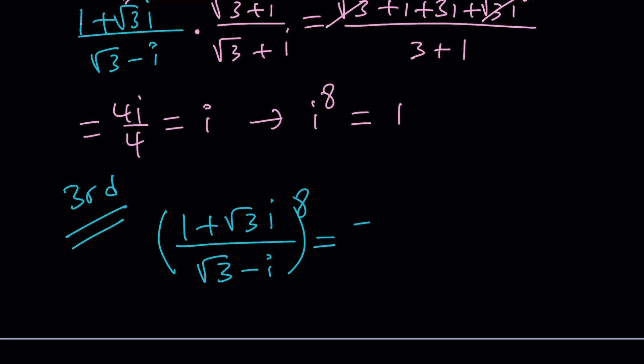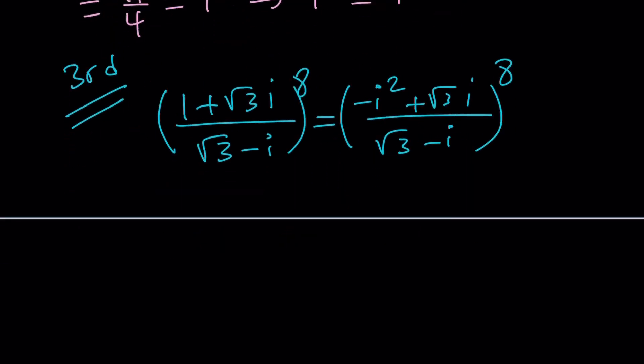So I'm just going to write the 1 as -i². And the goal behind it is to make it factorable. And so we're going to go ahead and take out an i here. So we can basically take out the i and write this as (-i + √3). And at the bottom, we have √3 - i.